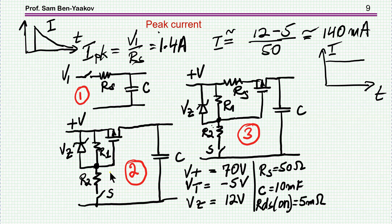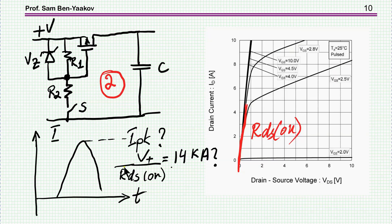Now, what about number two, the case of the MOSFET transistor? You would think that it is a function of the RDS on. In fact, if you have 70 volt in, 5 milliohm, then it comes up to be 14 kilo amp. Well, that's too much and that's not the case.